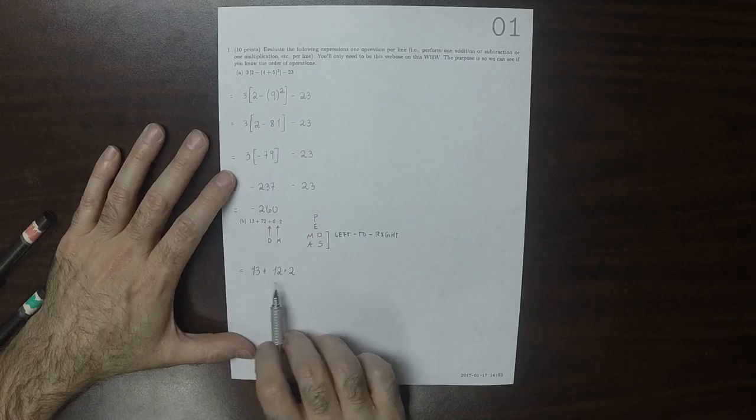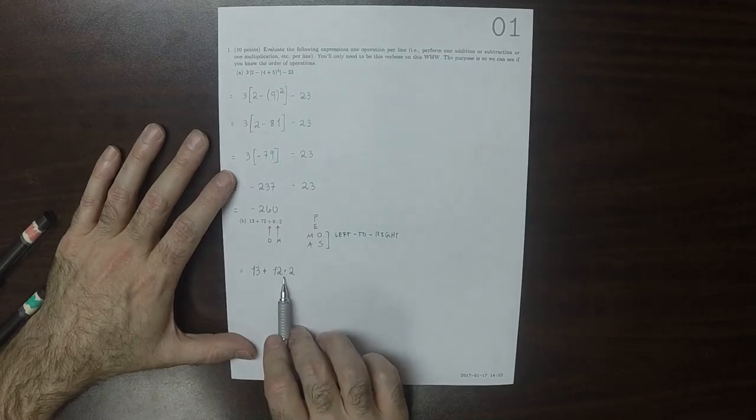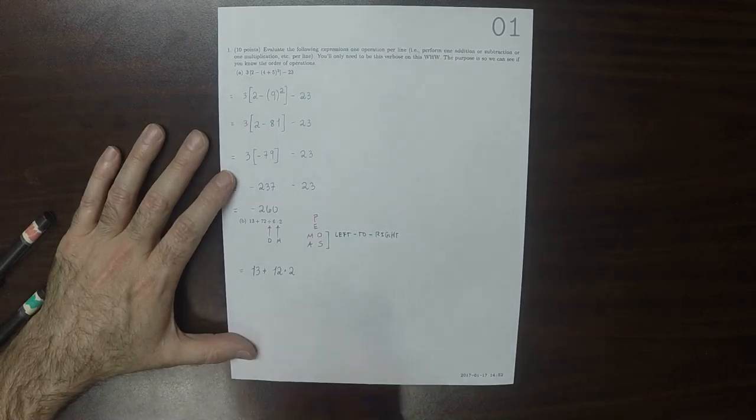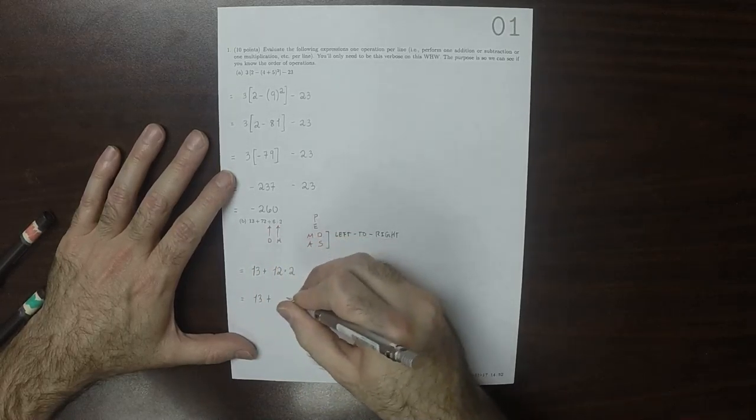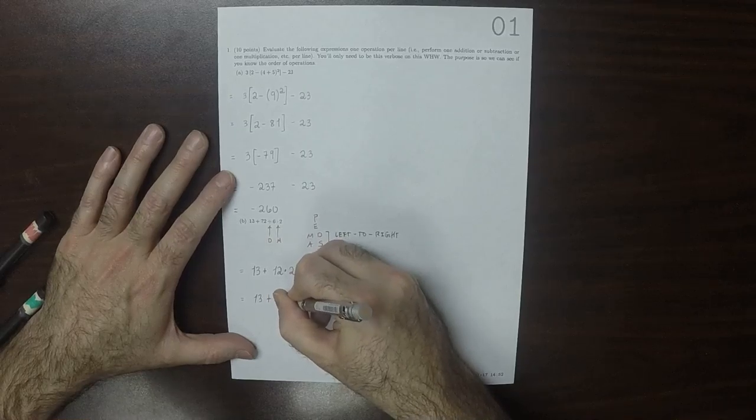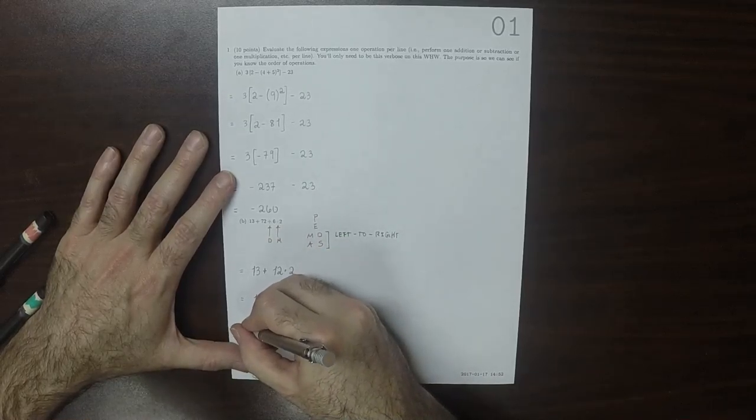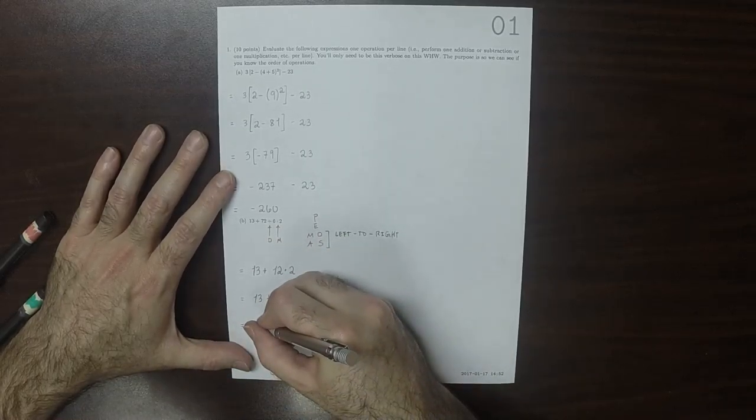Then now we have a multiplication and an addition. Multiplication comes first. So 13 plus 24, now there's just 1, so that's 37.